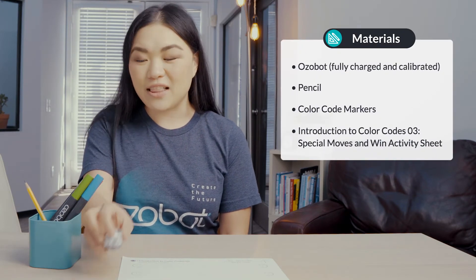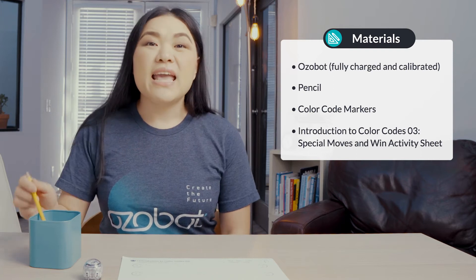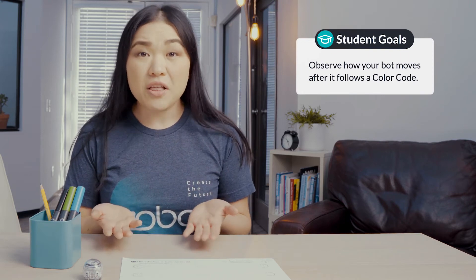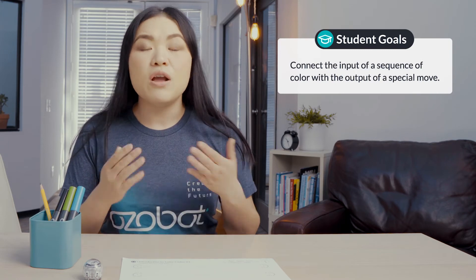For today's lesson you'll need an Ozobot fully charged and calibrated, color code markers, a pencil, and your Introduction to Color Codes Lesson 3 Special Moves and Win activity sheet. In today's lesson you will draw color codes to program your bot to move in different ways, observe how your bot moves after it follows a color code, and connect the input of a sequence of color with the output of a special move.